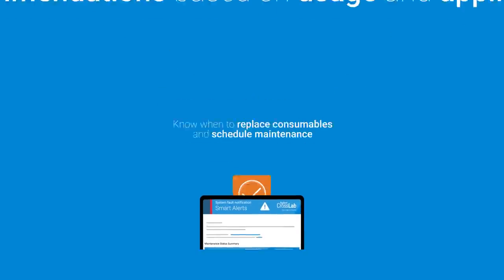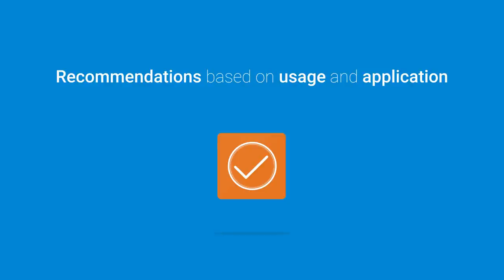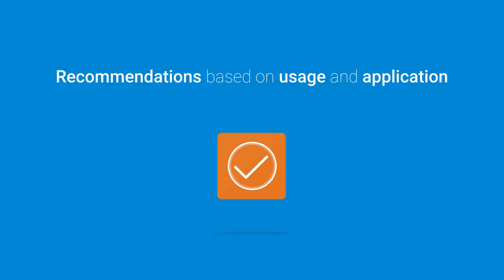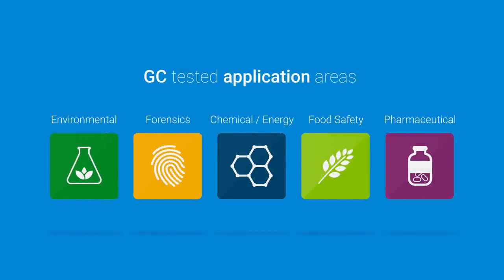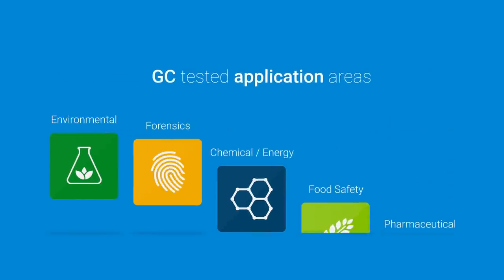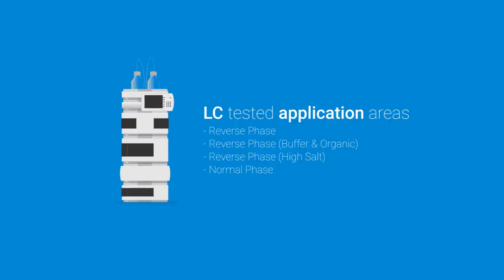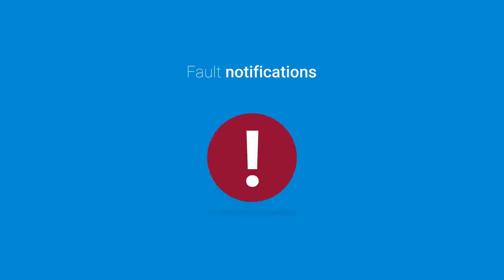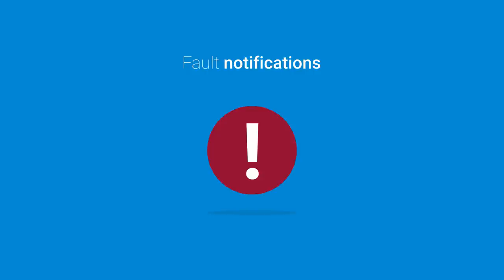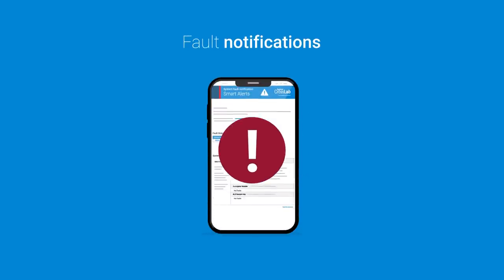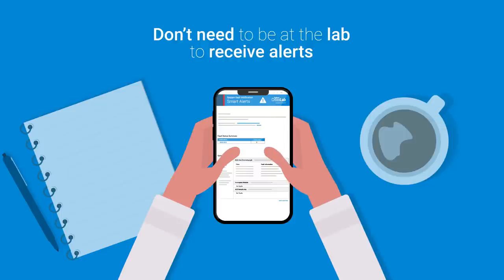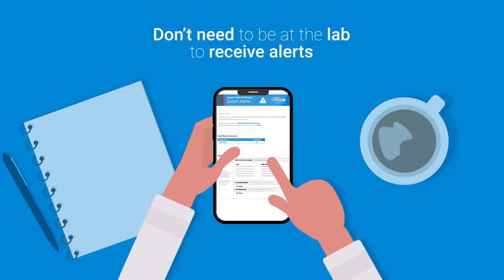Our recommendations are based on your instrument usage and Agilent's extensive testing of different applications, including GC application areas, LC application areas, and more. If one of your instruments has a fault or stops running, SmartAlerts immediately sends you a notification and you don't even need to be at the lab to receive these alerts.